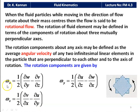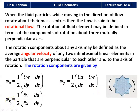To remember these equations: for ωx, rotation is about the x-axis, so the other two directions appear — ∂w/∂y (z-direction velocity differentiated with respect to y) minus ∂v/∂z (y-direction velocity differentiated with respect to z). For ωy, the other two directions give ∂u/∂z − ∂w/∂x. For ωz, there is no z or w term: ∂v/∂x − ∂u/∂y. Understanding this logic makes the expressions easy to remember.